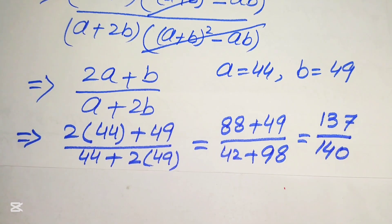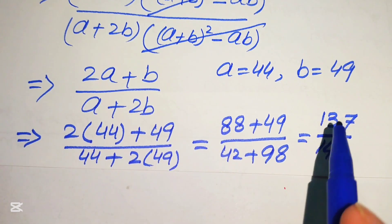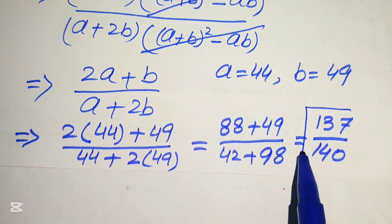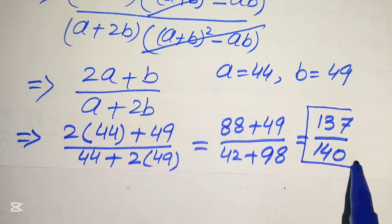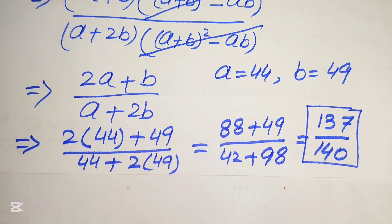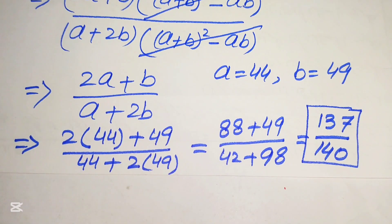So the final simplified form of the given algebraic expression is 137 divided by 140. That is our final answer. Thank you so much for watching this video — please subscribe to my channel for more exciting videos.